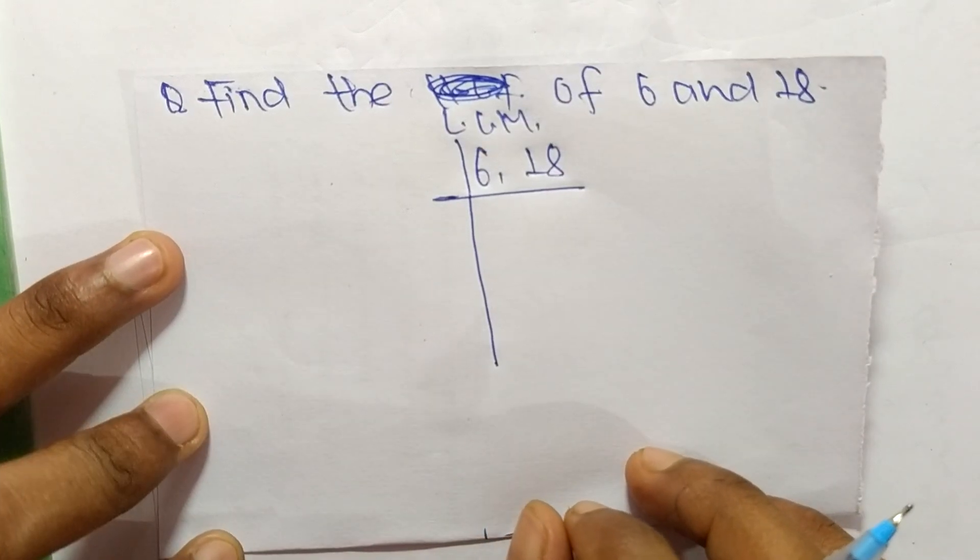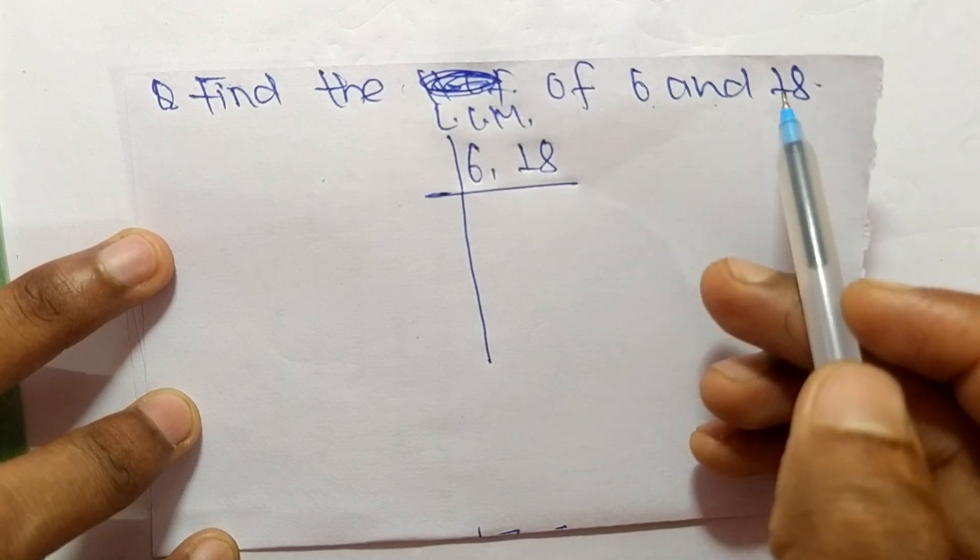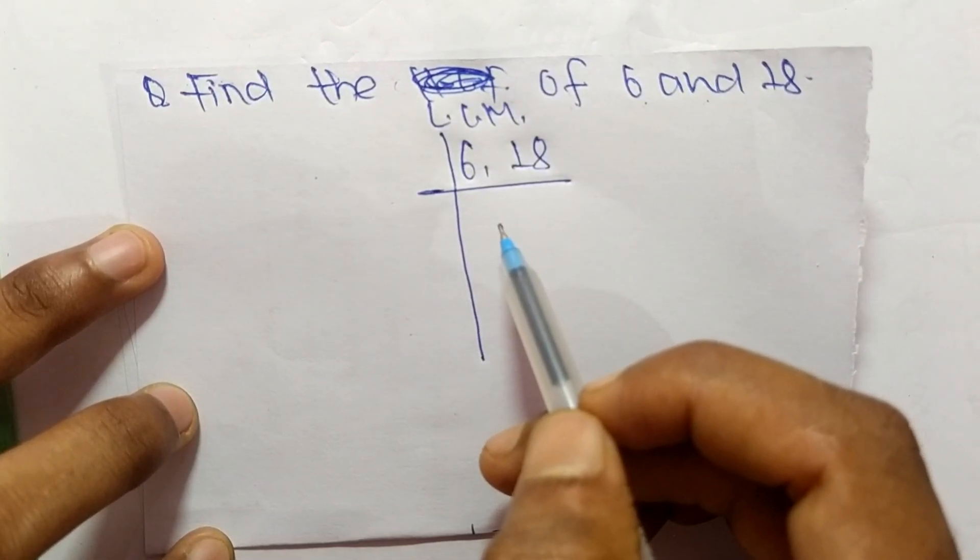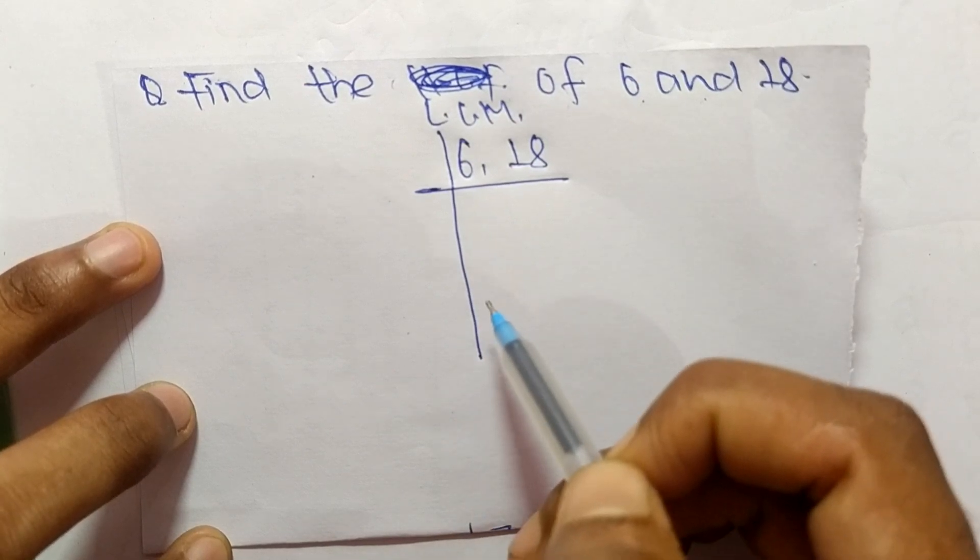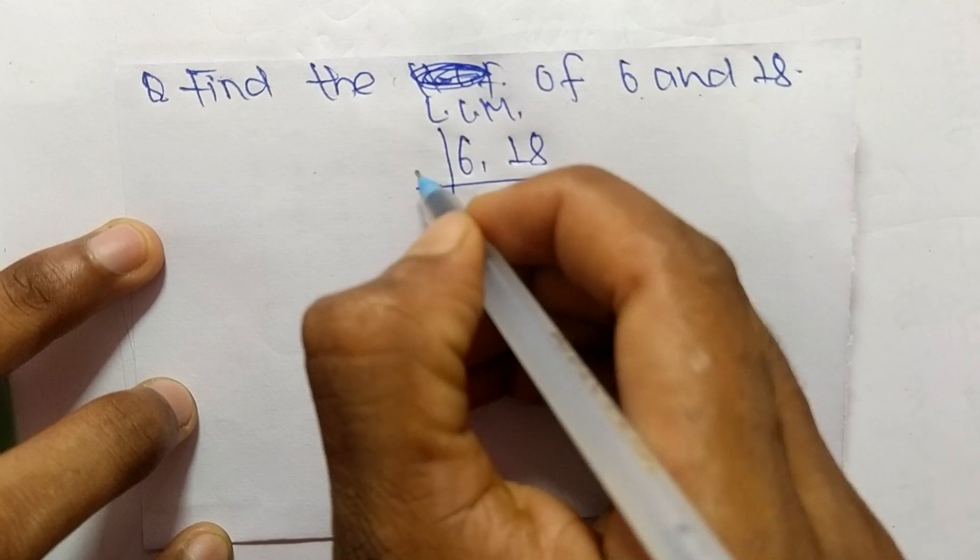Today in this video we shall learn to find the LCM of 6 and 18. To find the LCM, first of all we have to choose the lowest number which can exactly divide both numbers, so the number is 2.